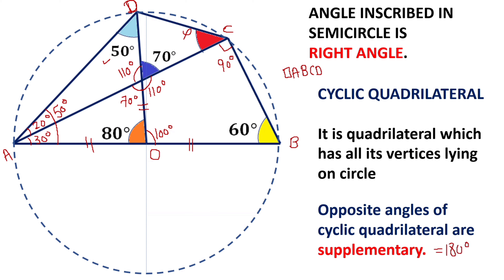So here you can see that the opposite angles: angle D, A, O plus angle D, C, B of this quadrilateral is equal to 180 degrees. Angle D, A, O is nothing but 20 plus 30, which is 50 degrees. And angle D, C, B is nothing but alpha plus 90 degrees, equal to 180 degrees. So 50 plus 90 is 140 degrees, plus alpha equals 180 degrees. And therefore, we get alpha as 40 degrees.